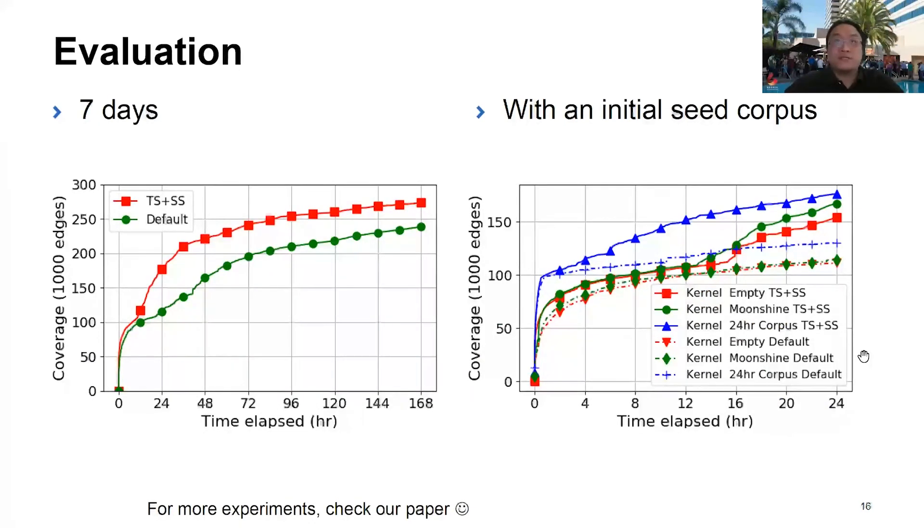Finally, we extend the fuzzing duration from one day to seven days. We find that SysVegas is still capable of maintaining its lead over Syzkaller. Also, in practice, fuzzing is often performed with a starting seed corpus, so we tested that as well. Our experiment shows that SysVegas makes better use of the initial seed corpus.